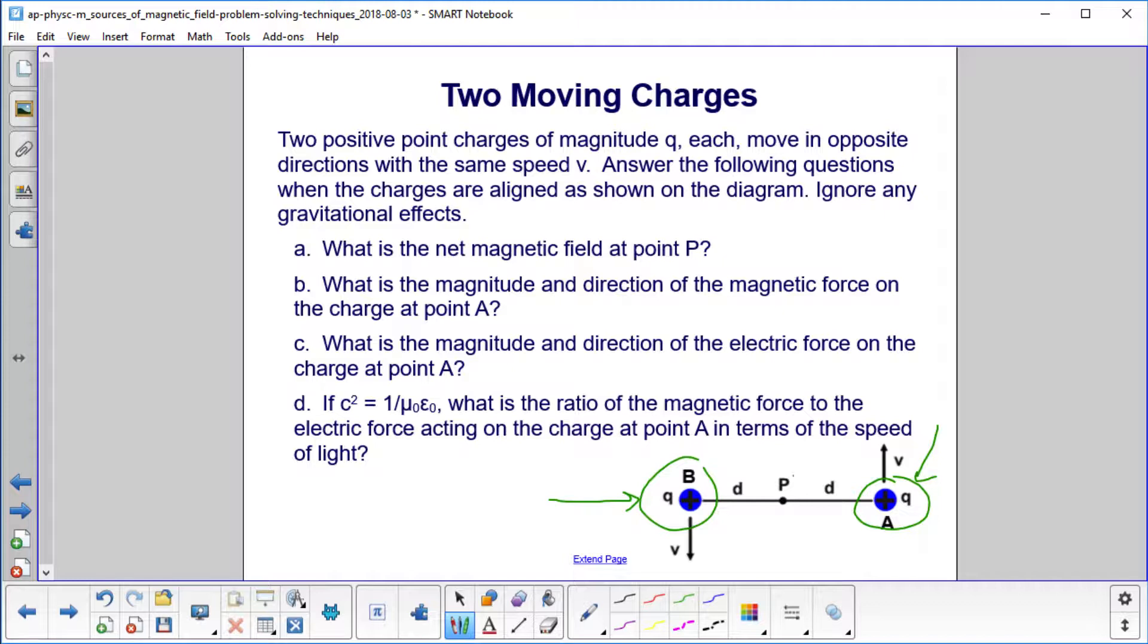What is the net magnetic field at point P? What is the magnitude and direction of the magnetic force on the charge at point A? And then what is the magnitude and direction of the electric force on the charge at point A?